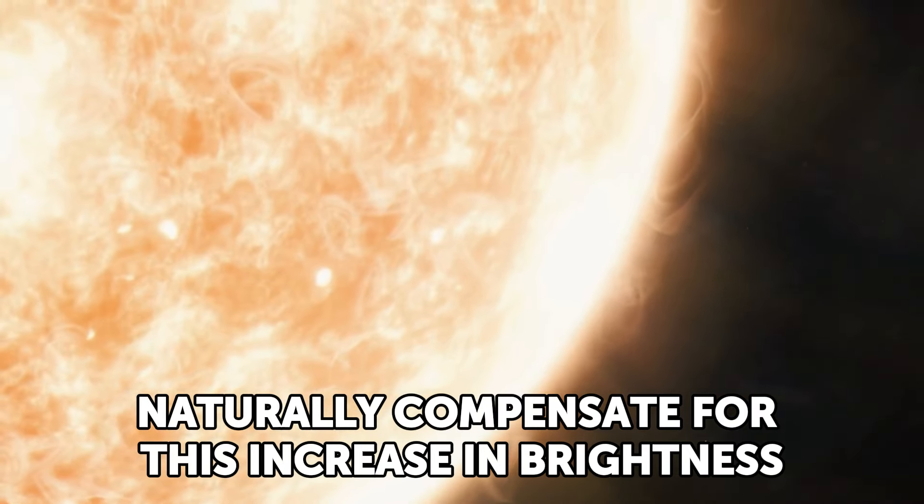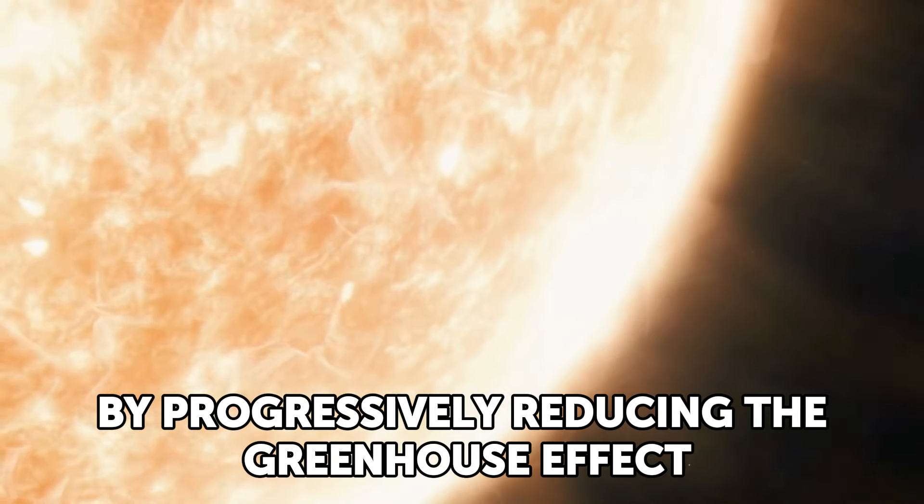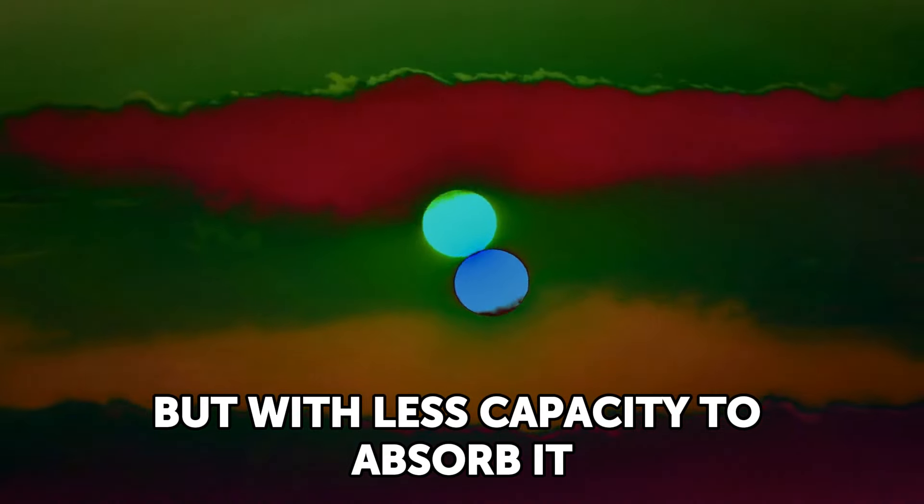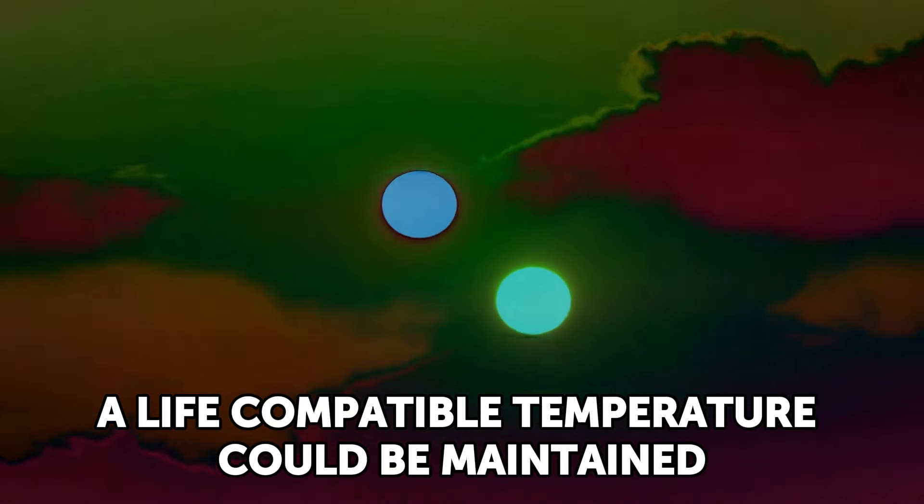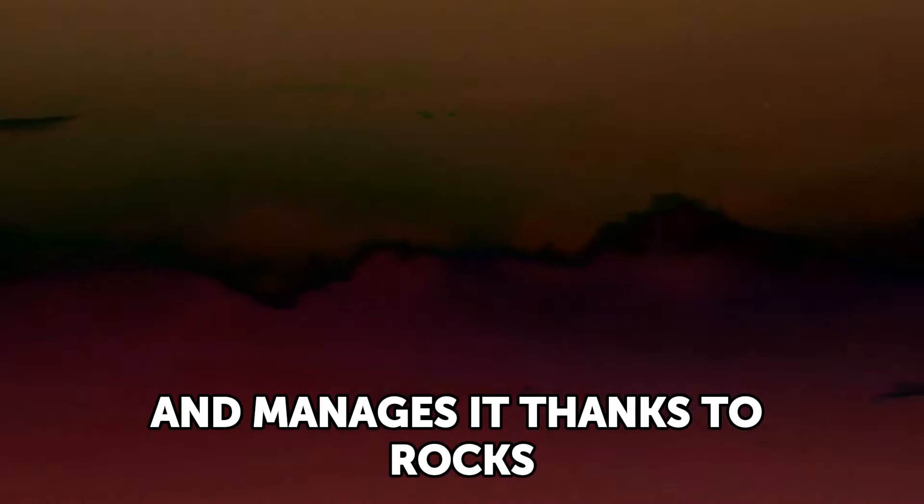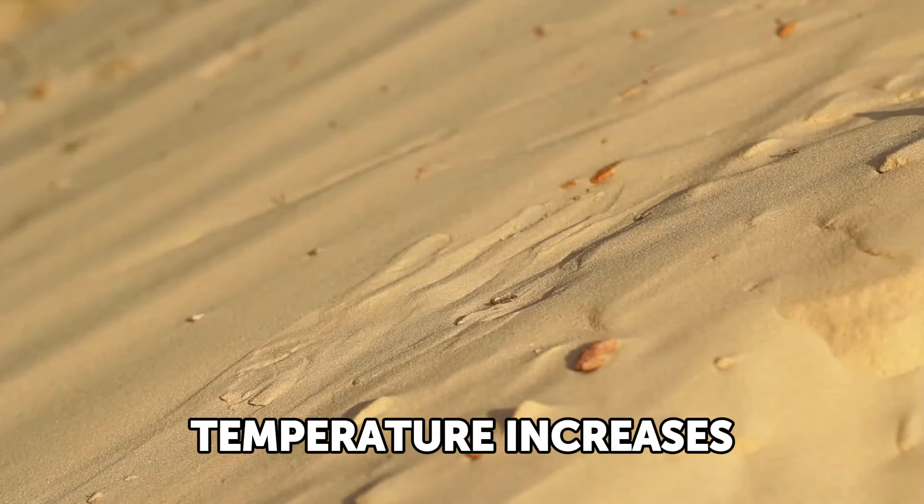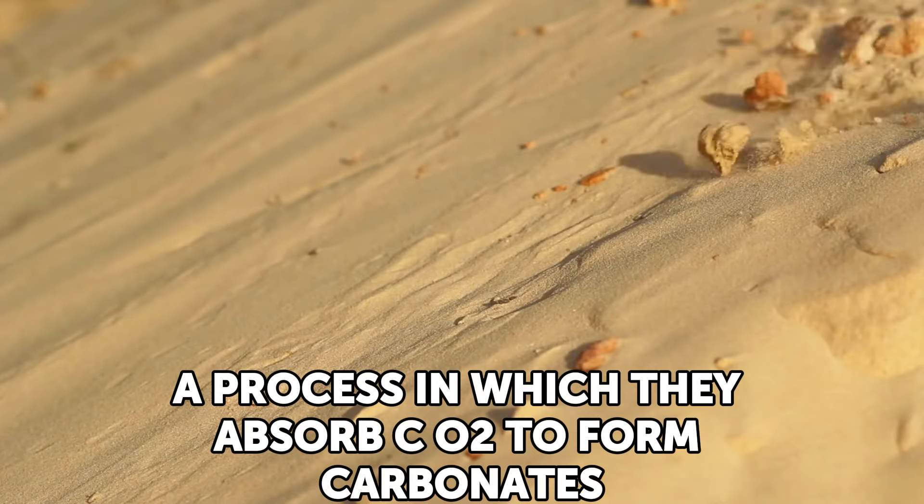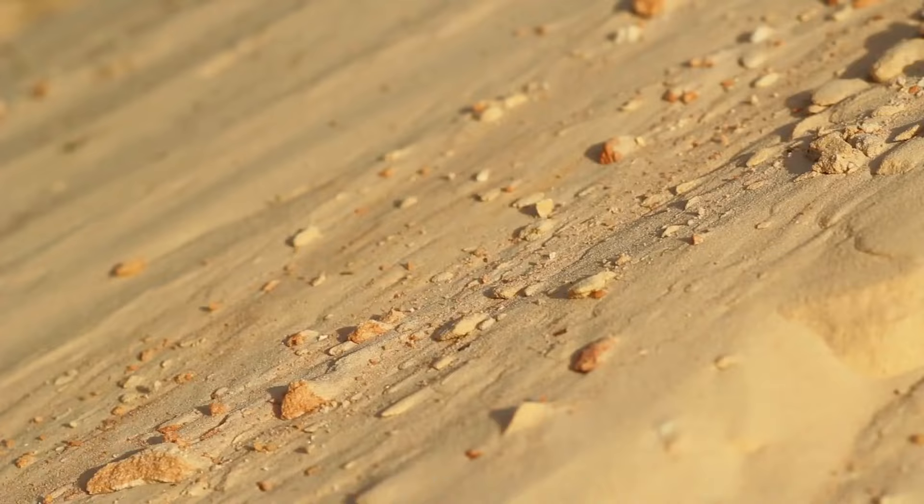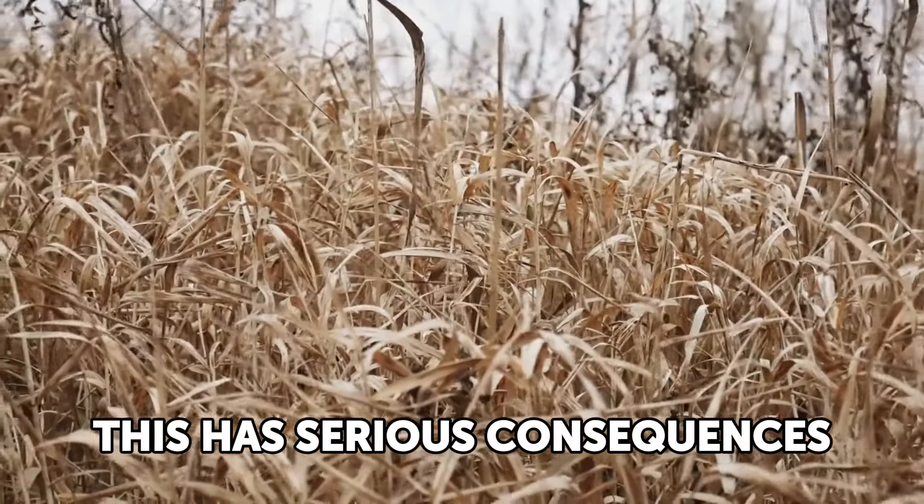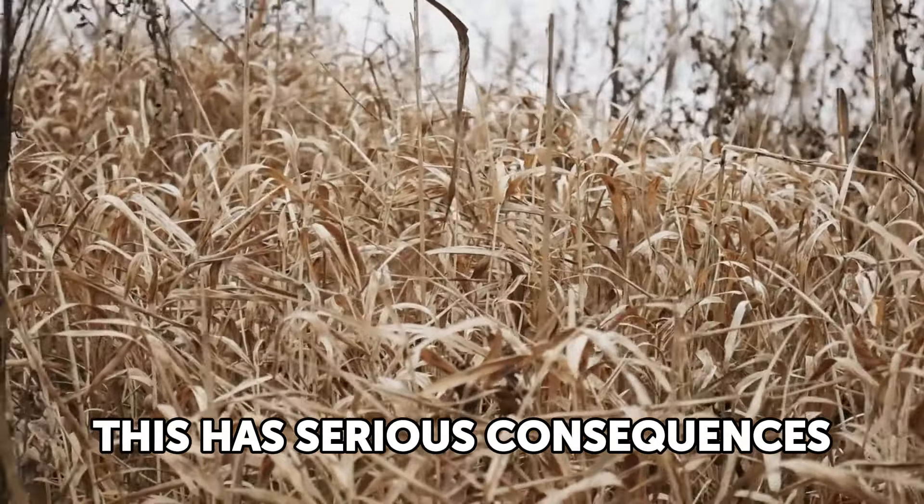But in about a billion years, the Sun will become too bright. Initially, the Earth could naturally compensate for this increase in brightness by progressively reducing the greenhouse effect. More light would enter, yes, but with less capacity to absorb it, a life-compatible temperature could be maintained. In fact, our planet has likely been doing this since it formed and manages it thanks to rocks. Temperature increases the erosion of silicates on the Earth's surface, a process in which they absorb CO2 to form carbonates. The greenhouse gas gets trapped in the rock and all is well.